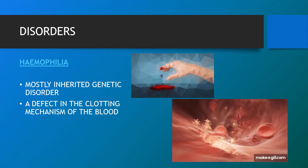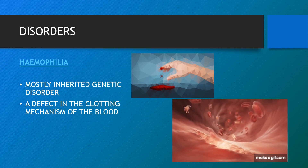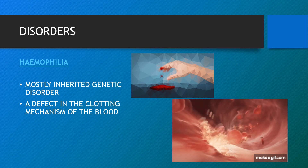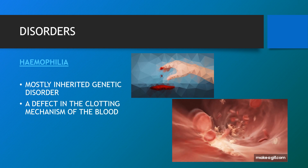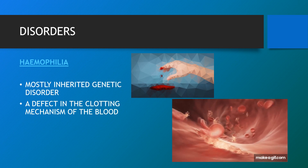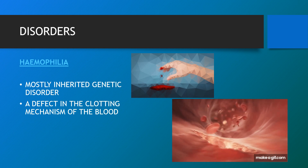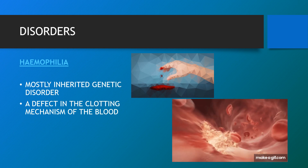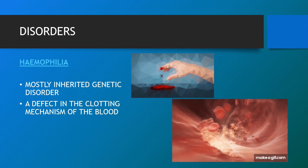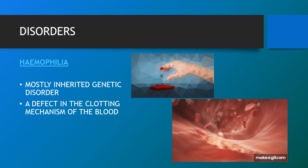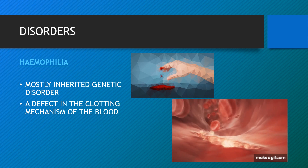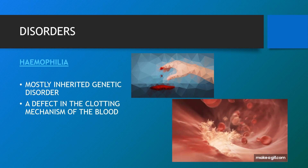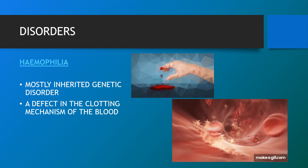Hemophilia is usually an inherited bleeding disorder in which the blood does not clot properly. This can lead to spontaneous bleeding as well as bleeding following injuries or surgery. Blood clotting involves many proteins called clotting factors that help to stop bleeding.